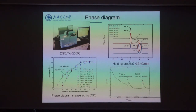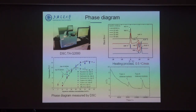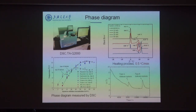Thermal properties are very important. We did many experiments to determine fundamental thermal properties. For the phase diagram, we used differential scanning calorimetry to measure phase change temperature and latent heat. From a lot of experiments we constructed the phase diagram and found that in the TBAB concentration range there are two kinds of hydrate: type A and type B, with some differences between them. For the latent heat, type B typically has about 200 kJ/kg, which is about two-thirds of that of ice, indicating the latent heat is quite high.